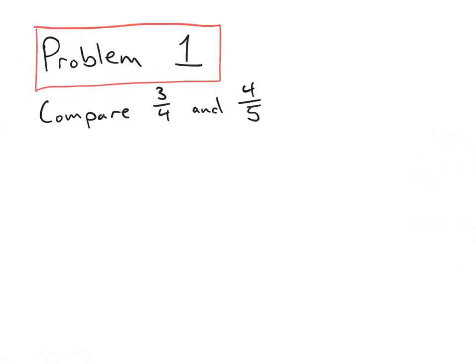Problem number one asks us to compare three-fourths and four-fifths. From our learning in Lesson 14, we know that it's very helpful when comparing fractions to have the two fractions either have similar numerators or similar denominators. Our first step is to see if we can multiply the numerator and the denominator of one fraction to equal the numerator and denominator of the other. But we can't multiply three by anything to get four, and we can't multiply four by anything to get five — so we're stuck.